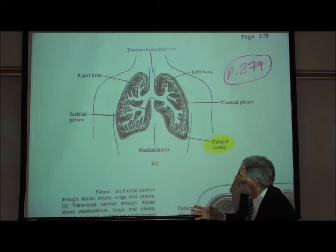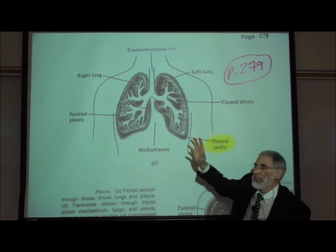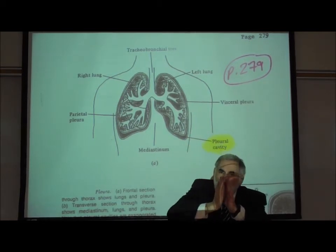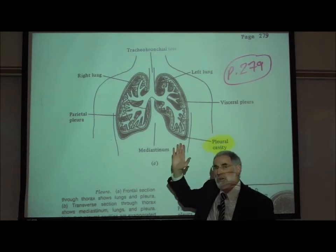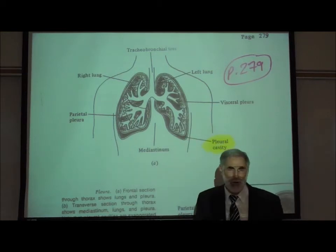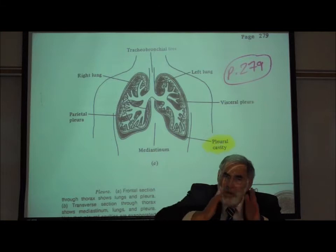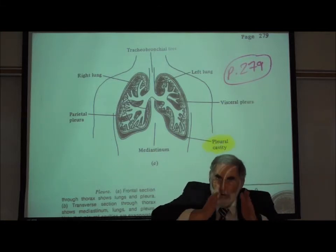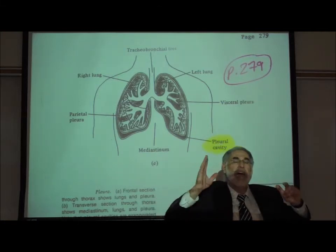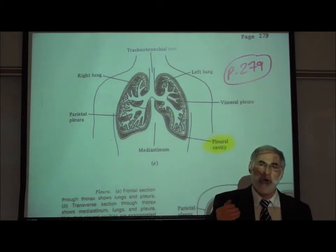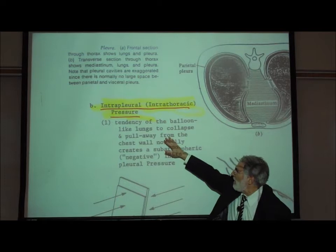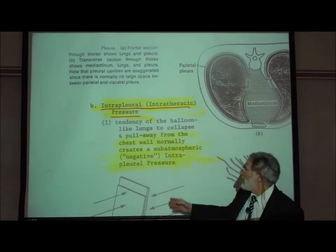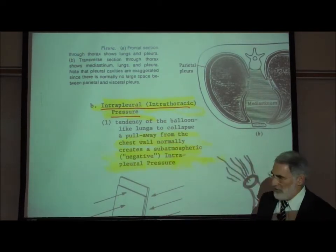In a similar fashion, what's normally going on is the lung and the chest wall are trying to pull apart. That lowers the pressure between the lung and the chest wall — in other words, it lowers the pressure in the pleural cavity. Normally, because the lung and the chest wall are trying to pull in opposite directions and pull away from each other, that creates a sub-atmospheric or negative intrapleural pressure. The tendency of the balloon-like lungs to collapse and pull away from the chest wall creates a sub-atmospheric or negative intrapleural pressure.